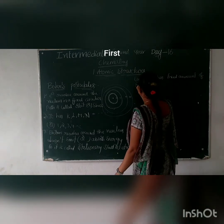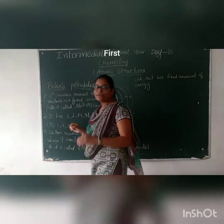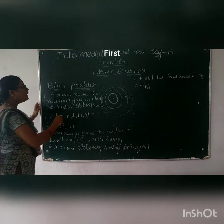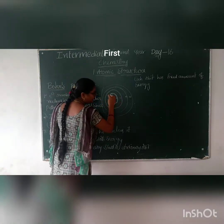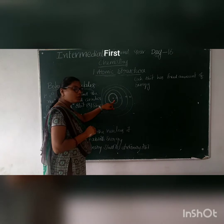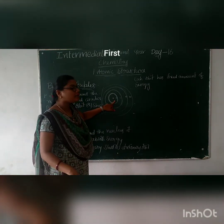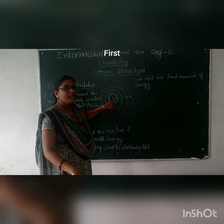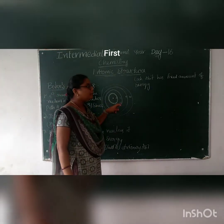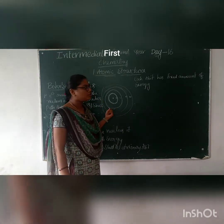So each orbit has a fixed amount of energy. That is also the important part. The orbit has a fixed amount of energy, and the energy is fixed. The orbit has a constant energy.